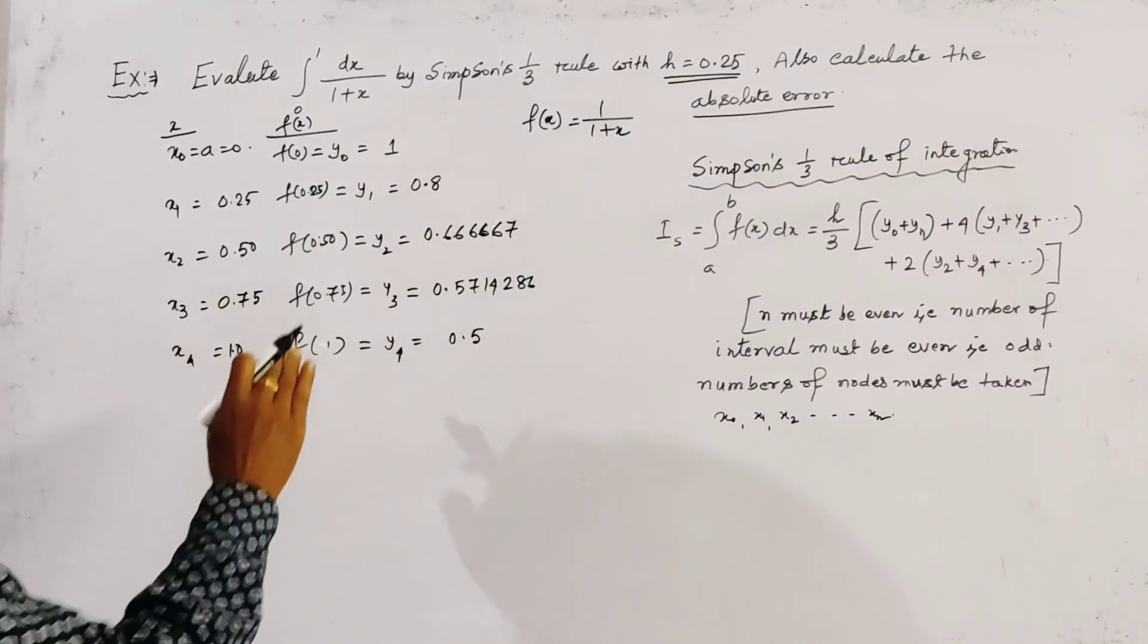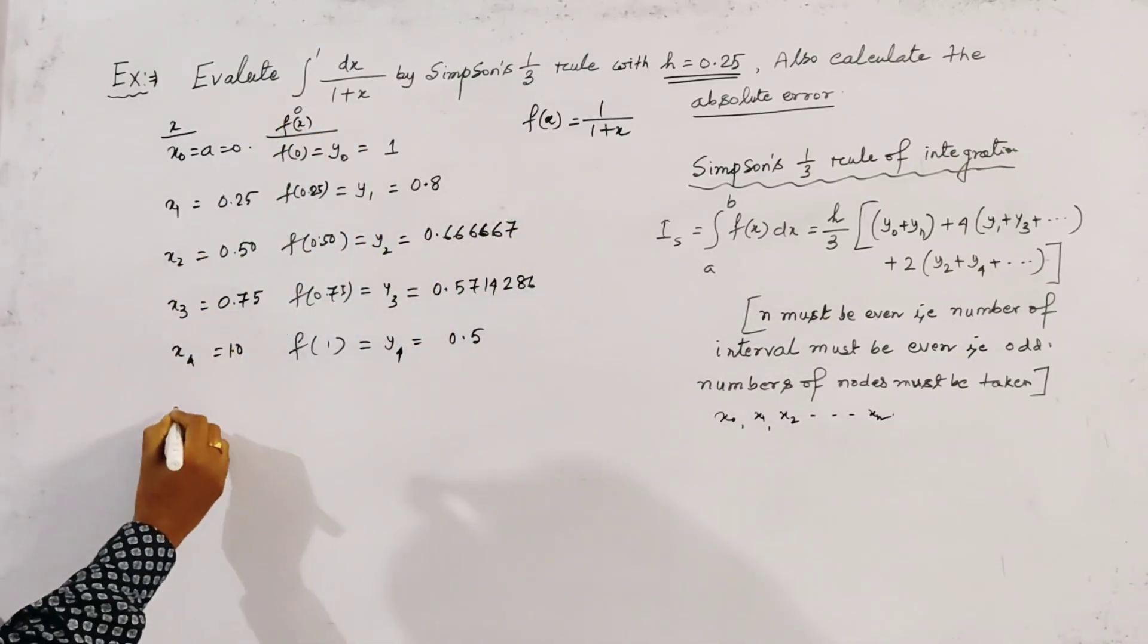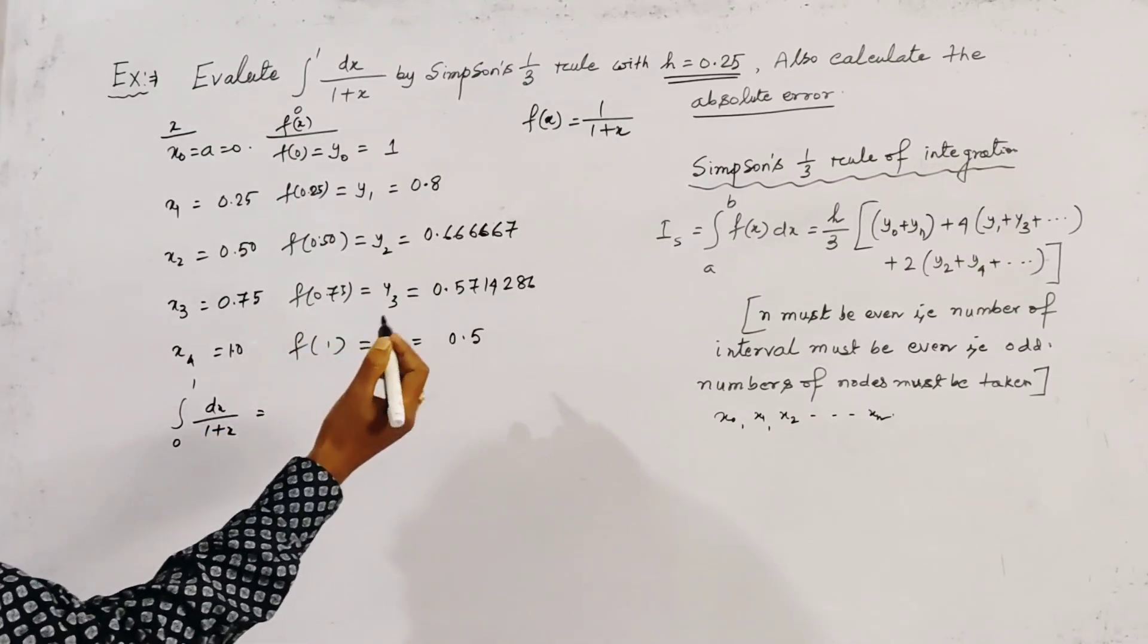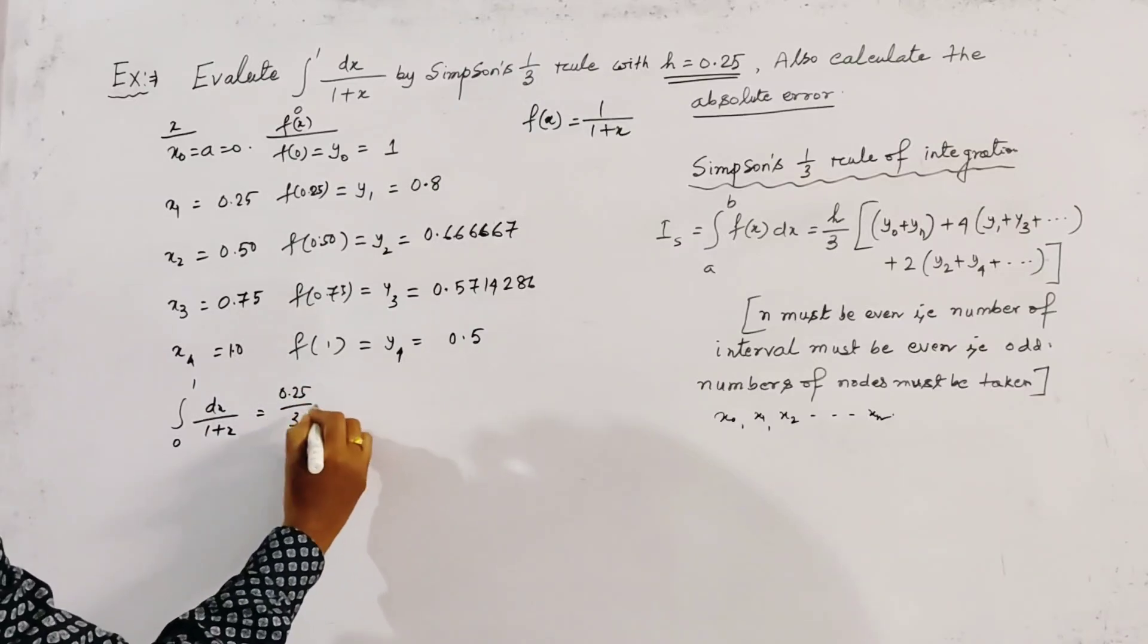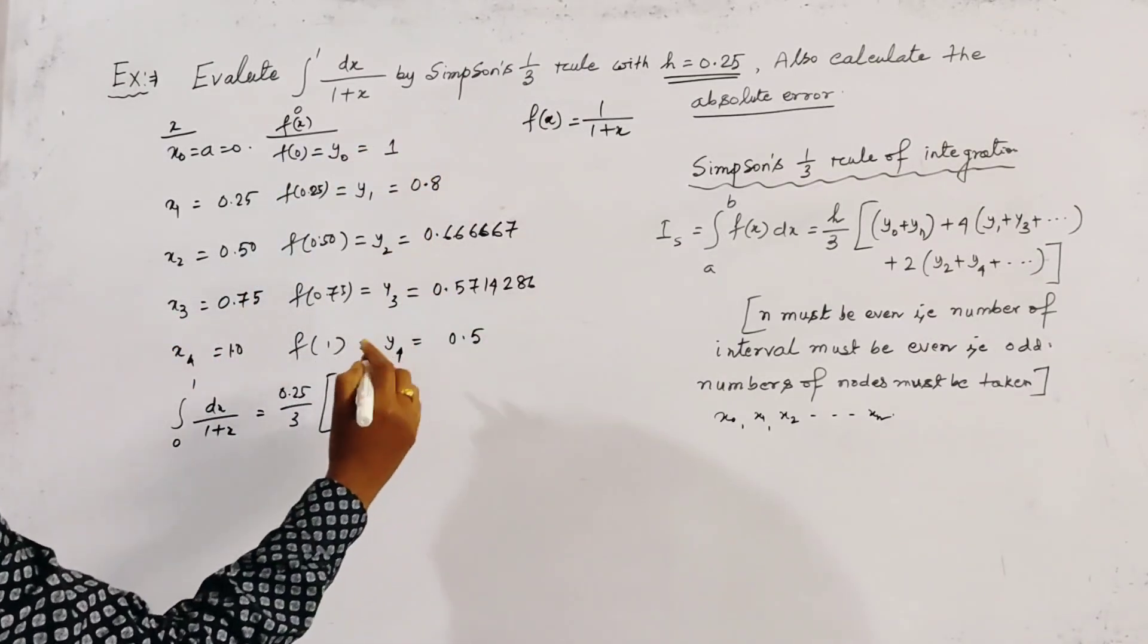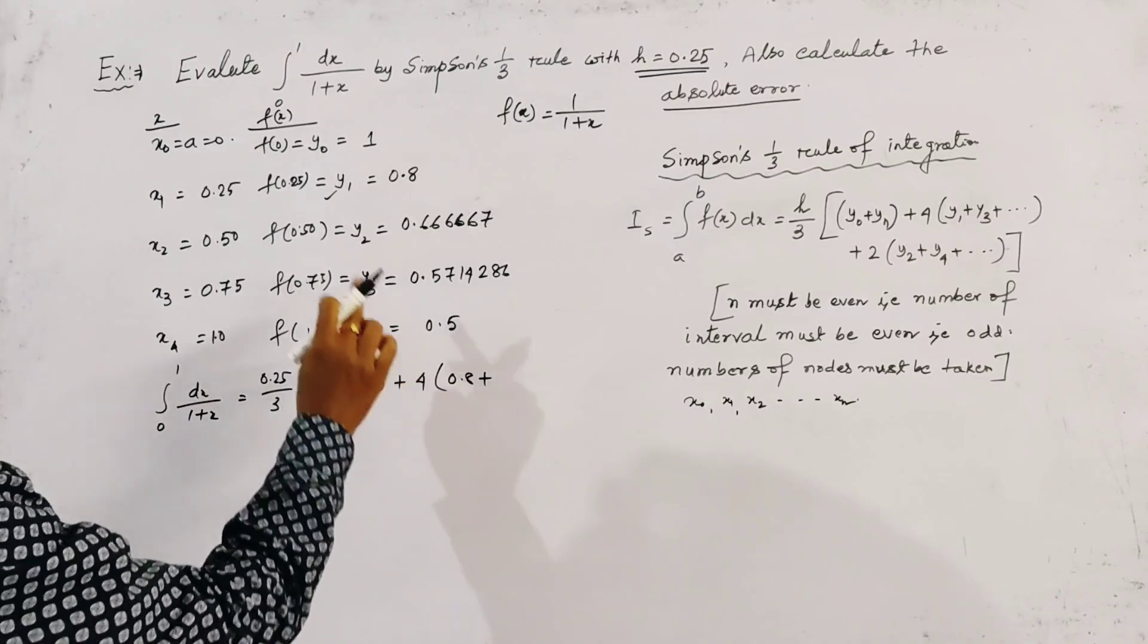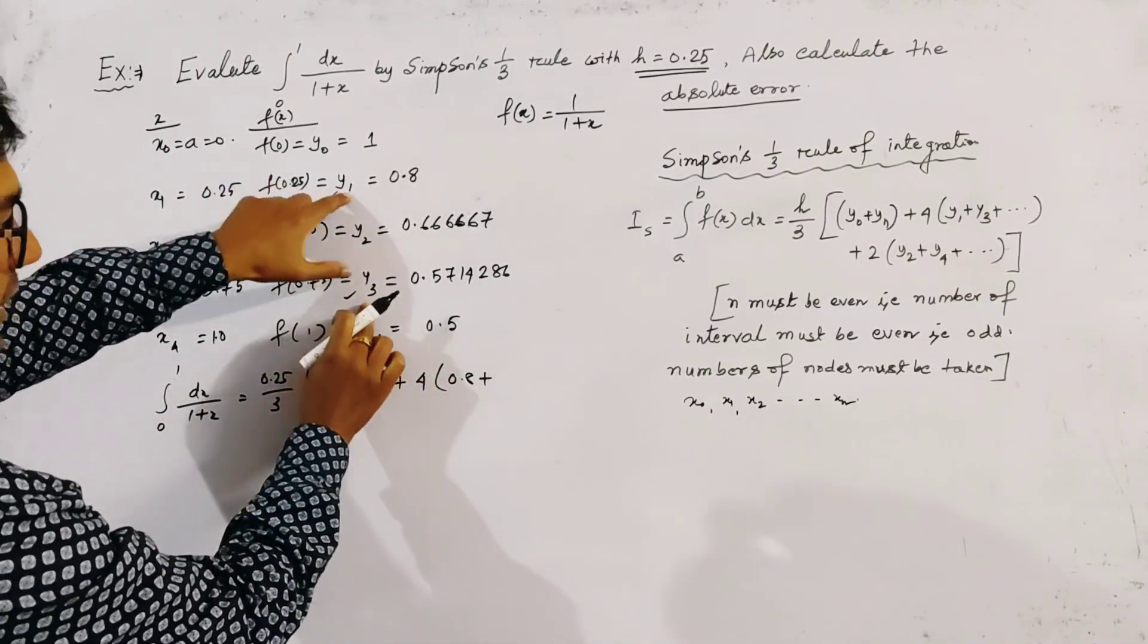Now putting all these values in the formula: the integration from 0 to 1 of dx/(1+x) is given by h/3, which means 0.25/3, times the first and the last coordinate—this is 1 plus 0.5—plus 4 times y₁ and y₃.